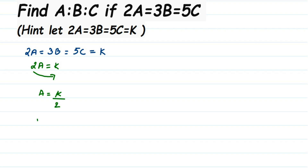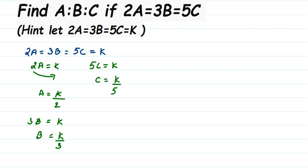Similarly for B: 3B equals K, so B equals K divided by 3. And next, 5C equals K, so C equals K divided by 5. Now I have the value of each A, B, and C, and I'm going to find out the ratio.